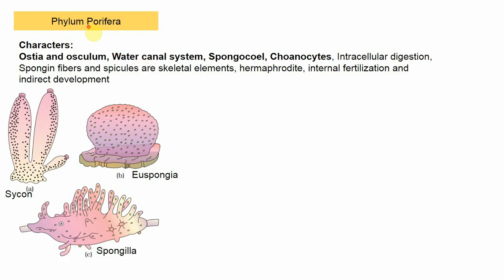We begin with phylum Porifera. The body is covered by numerous pores called ostia — the minute pores — and a single large opening called the osculum. There is a water canal system that allows water to enter through ostia and escape through the osculum. The main importance of the water canal system is to capture food and for respiration. The body cavity is referred to as the spongocoel, lined by special cells called choanocytes, whose main function is to collect food particles. The skeletal elements in Porifera are spongin fibers and spicules.